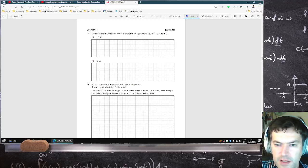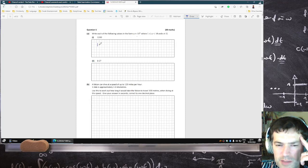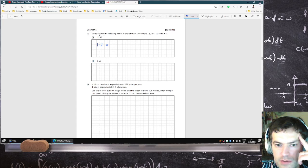Next now, write each of the following in scientific form. So that's going to be 1.2 times 10 to the 3. And then that would be 2.7 times 10 to the minus 1.